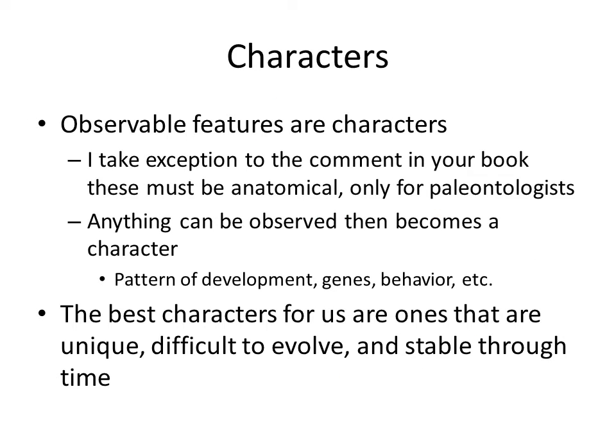What can we actually use? We can use characters — observable features that we can use to understand relationships to one another. An observable feature might be, for mammals, that these animals have hair. For paleontologists, features have to be anatomical. But for a lot of other groups we don't use just anatomical things — anything that we can observe can be a character. A behavior, for instance — even if it's learned, if it's taught by a group of members and is a heritable behavior, it itself can be understood through a phylogeny.